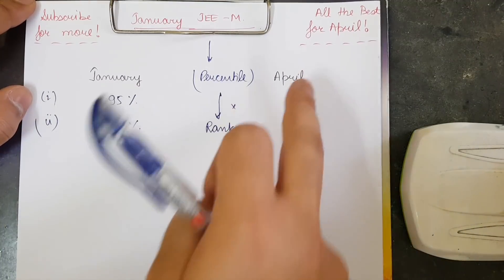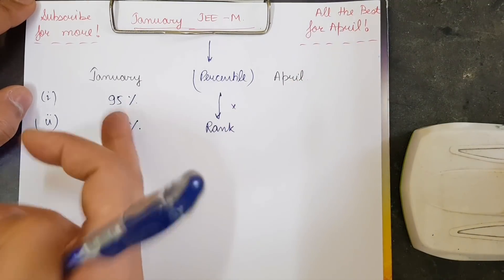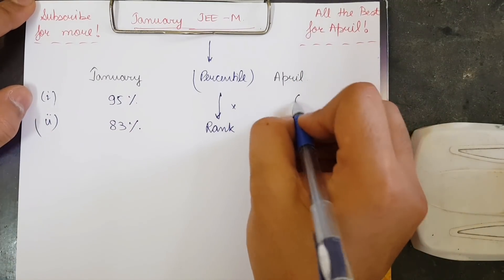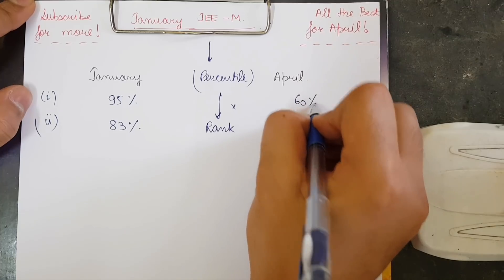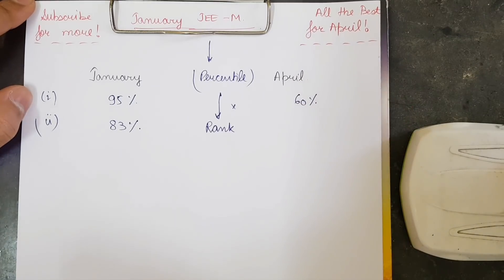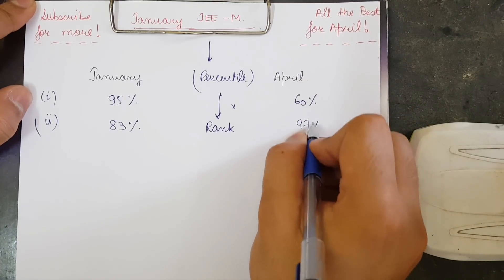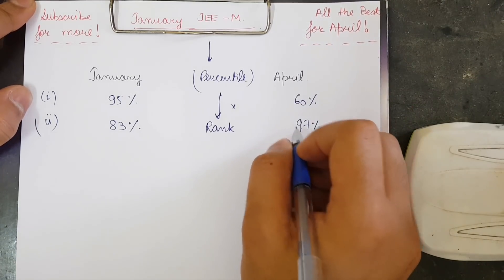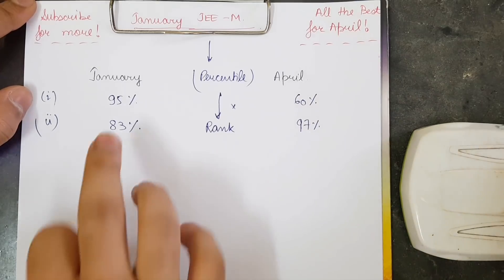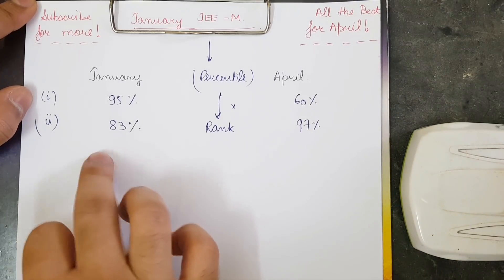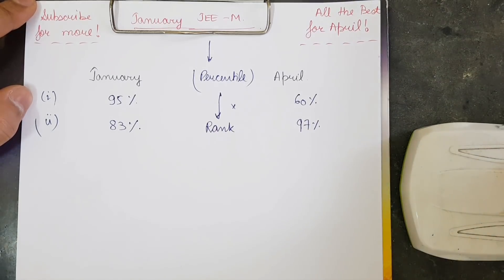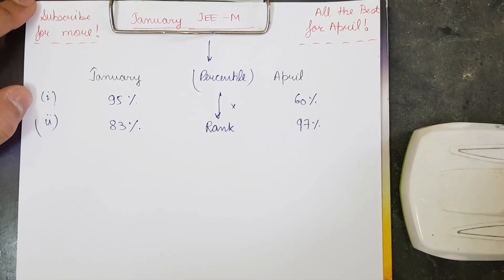Similarly, in April JEE Mains, student 1 got 60 percentile and student 2 got 97 percentile. Student 2 worked very hard for it — it is not very difficult to go from 83 to 97 percentile.